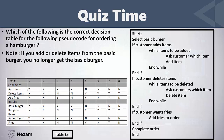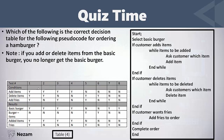Table two has eight test cases, which is good, but let's look at the conditions. Test case number one says yes-no-yes, and test case number three also says yes-no-yes. This is wrong — we should have eight unique test cases that are different from each other. We can't have two test cases with the same input, so this table is wrong.